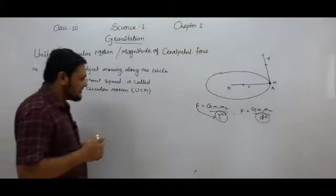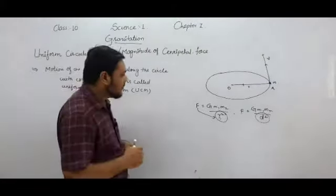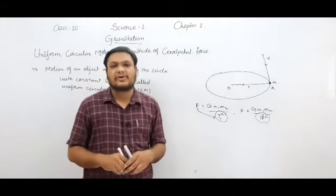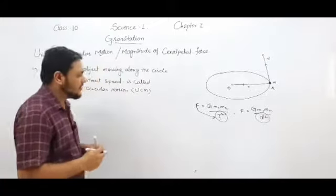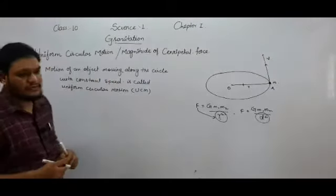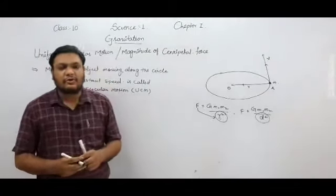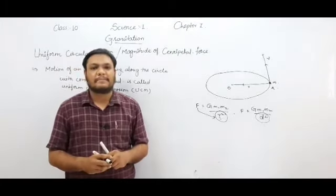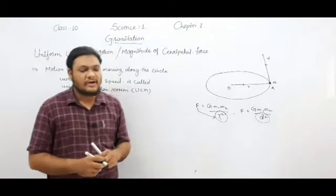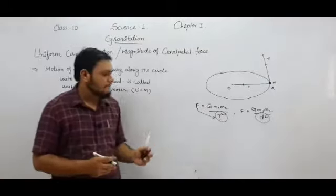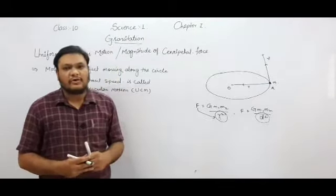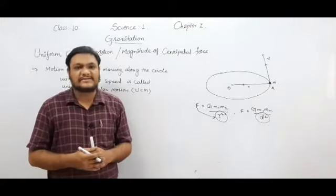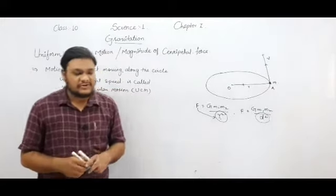The question before us is: why did Newton assume the inverse square dependence on distance in his law of gravitation? He was helped by Kepler's third law of planetary motion to formulate this theory. We will now see how Kepler's third law helped Newton formulate the inverse square dependence law.